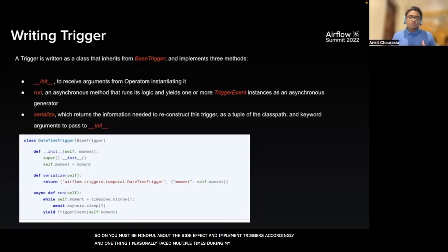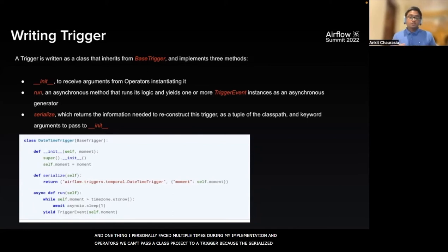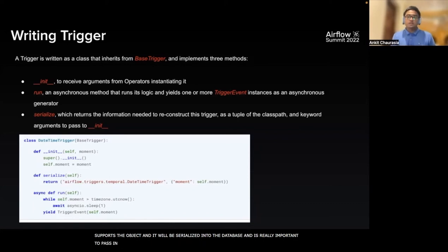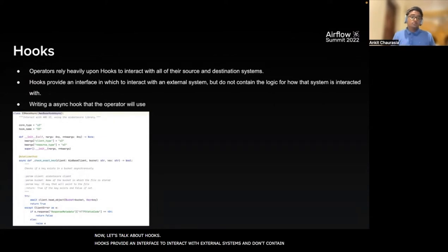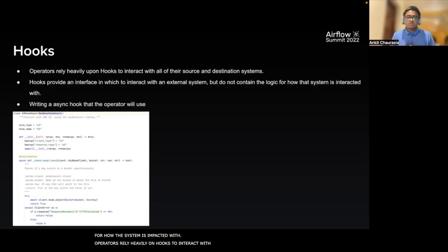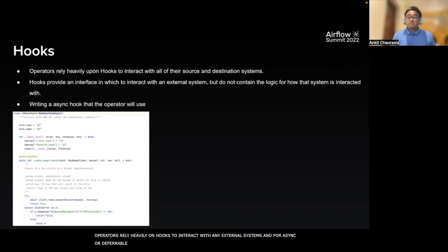From the operator, we cannot pass a class object to a trigger because the serialize method only supports JSON-serializable objects, as it will be serialized into the database. It's really important to pass only JSON-serializable objects to the trigger. Hooks provide an interface to interact with external systems but do not contain any logic for how the system is interacted with. Operators rely heavily on hooks to interact with external systems. For async or deferrable operators, writing an async hook that the operator will use is really necessary.